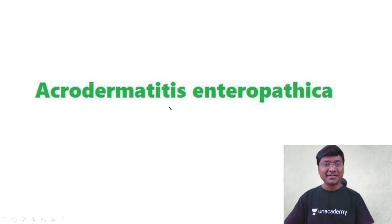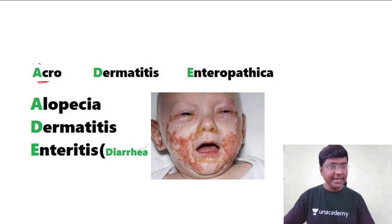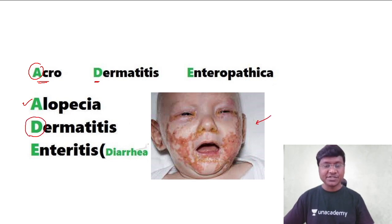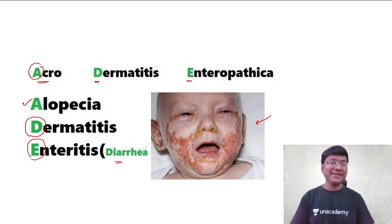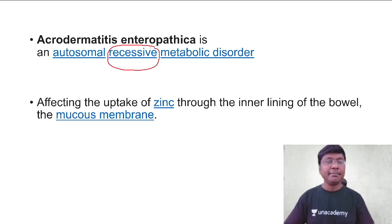Let me give you how to remember the triad in Acrodermatitis Enteropathica. Please remember: Acro — A is Alopecia, where you have loss of hair; D is Dermatitis, where you can observe the skin manifestations in patients with Acrodermatitis Enteropathica; and E is Enteritis, which presents in the form of diarrhea. This is the triad of Acrodermatitis Enteropathica, and you have to remember that it is an autosomal recessive metabolic disorder.